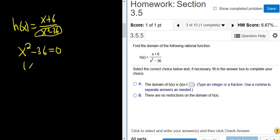This is the difference of squares. So x plus 6, x minus 6 equals 0. So we get two answers here, negative 6 and 6.